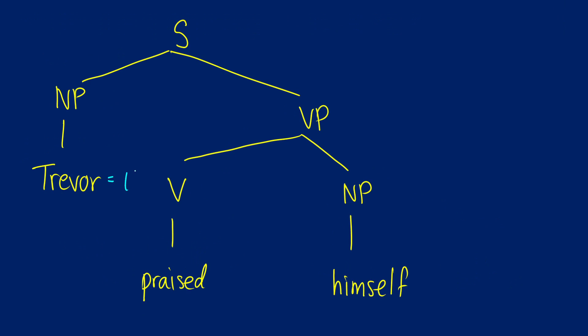So I'm going to say that Trevor is T, and that's going to move up. Praised is going to be lambda Y dot lambda X dot X praised Y. So that's object first and then subject. That is going to move up the tree. So lambda Y dot lambda X dot X praised Y.